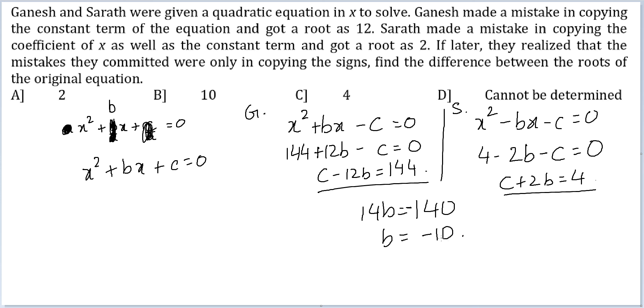And if b is equal to minus 10, let me find out the value of c. c minus 20 is equal to 4. c should be equal to 24. Fine.